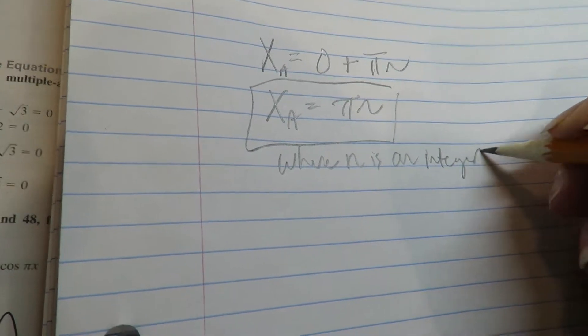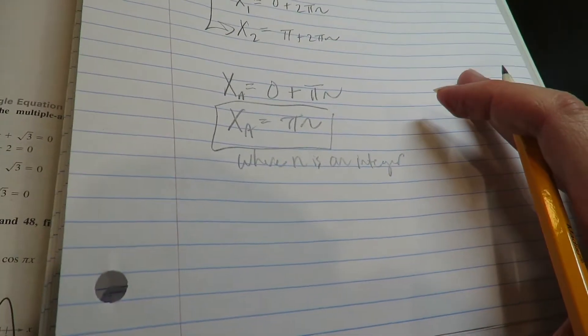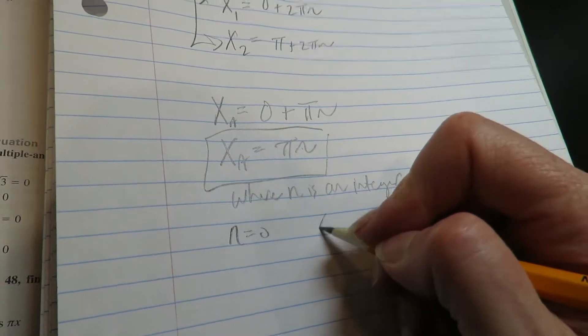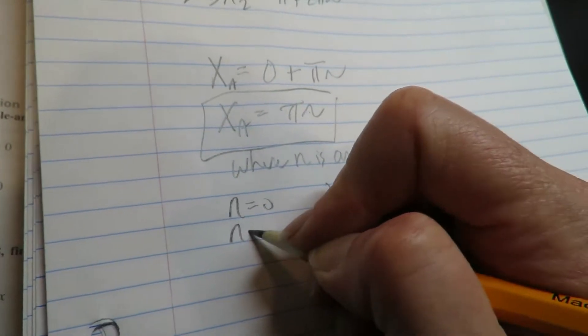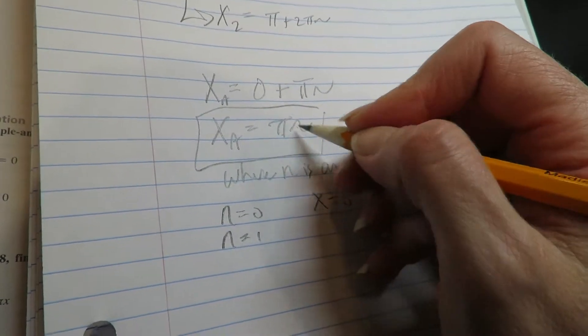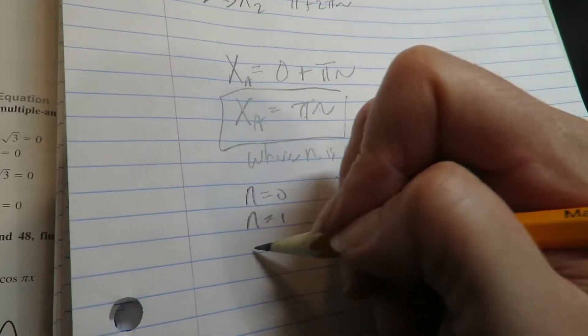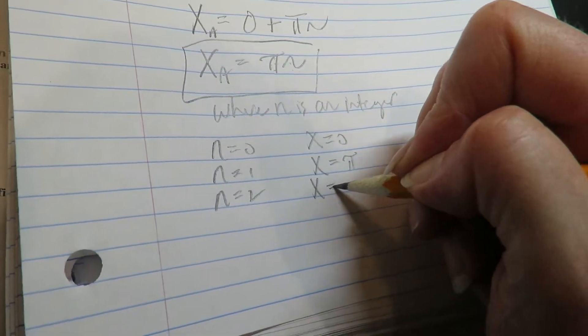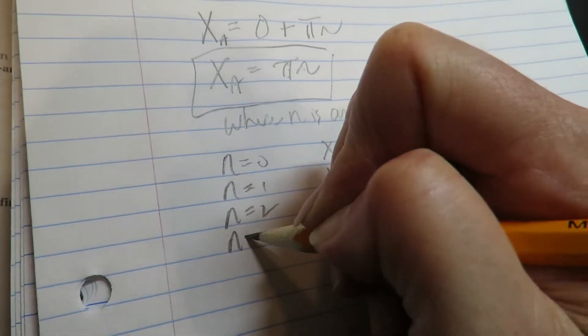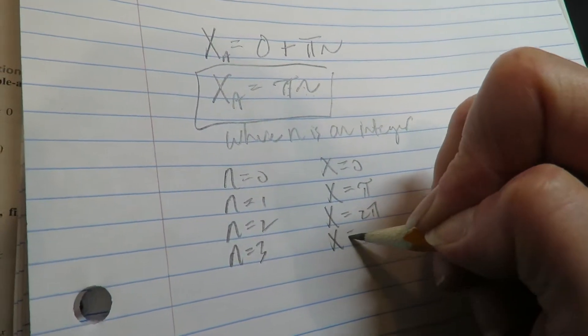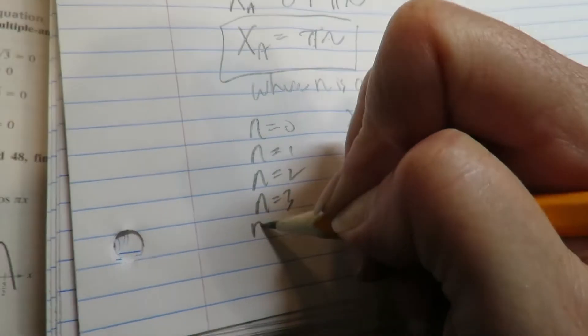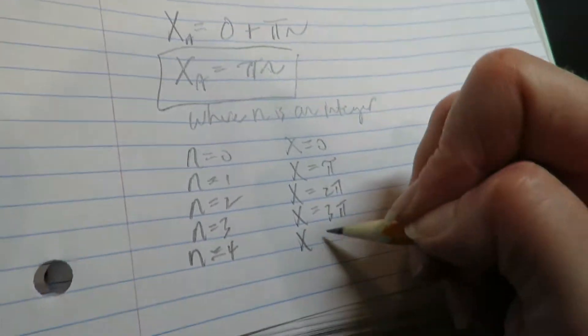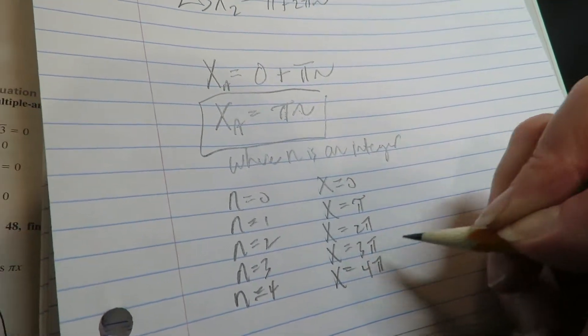The book sometimes uses k. I tend to use n. So if it uses k, it's the same concept. So, for instance, if n is zero, zero times pi is zero. If n is one, pi times one is pi. If n is two, two times pi is two pi. If n is three, three times pi is three pi. If n is four, four times pi is four pi. So it's giving you these answers.